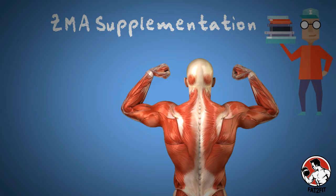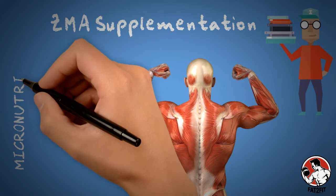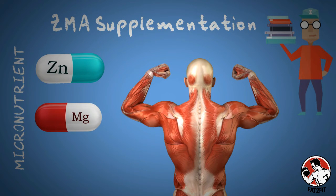ZMA is useful on account of three critical micronutrients that your body needs: Zinc, Magnesium, and Vitamin B6.